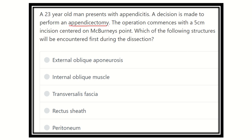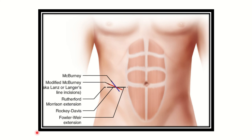The operation involves a 5-centimeter incision at McBurney's point. The answer options are: external oblique aponeurosis, internal oblique muscle, transversalis fascia, rectus abdominis, and peritoneum. We have to find out which one is the correct answer.